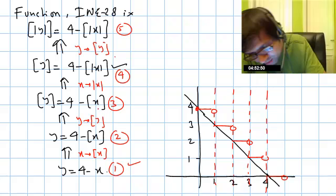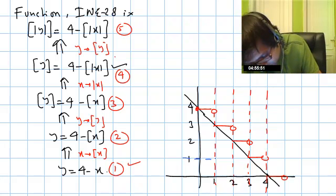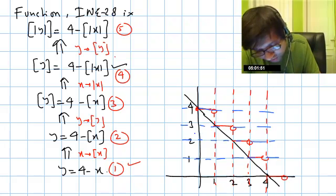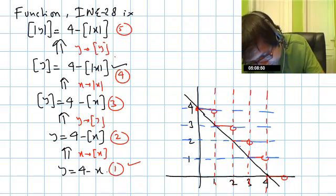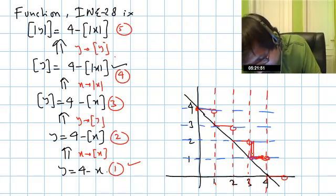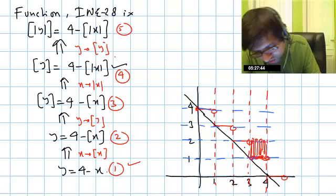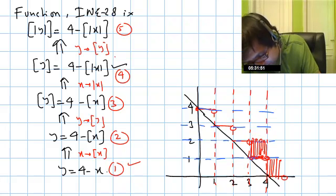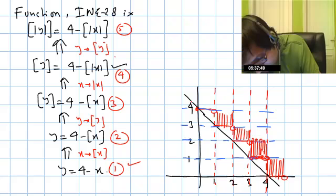From the second to third graph, replace y by greatest integer of y — draw horizontal lines at integer points and mark points of intersection. You can see there are infinite points of intersection between y = 1 and the graph of the second function. From every point of intersection, we draw a step up of one unit length, open at the top. Since there are infinite points of intersection, instead of a curve, this step produces a bounded area. This is the graph of the third function in the first quadrant.